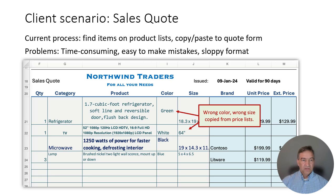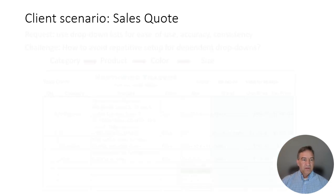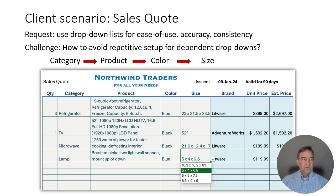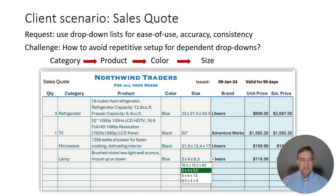Their product lists were not all in a consistent format, so if they pasted and included formatting, it would lead to problems — as you can see in the example, a not very nice looking sales quote that you wouldn't necessarily want to turn over to a customer. They asked us for help. What they wanted was to make all of these fields be dropdowns, so their sales associates didn't have to look across all their product lists — they would just click a dropdown, pick the right product, and the pricing would fill in automatically. The challenge was how to do this and avoid a lot of repetition setting up dependent dropdowns on each cell.